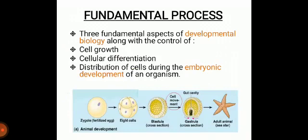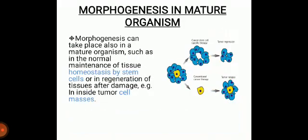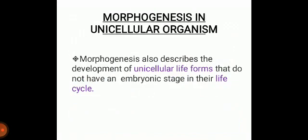The process also controls the distribution of cells during embryonic development. Morphogenesis also takes place in mature or multicellular organisms, such as in the normal maintenance of tissue homeostasis by stem cells or in the regeneration of tissues after damage. Morphogenesis is essential for the evolution of new forms, and it also describes the development of unicellular life forms that do not have an embryonic stage in their life cycle.